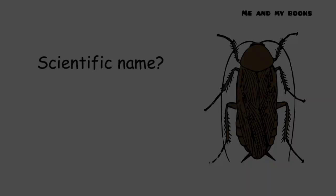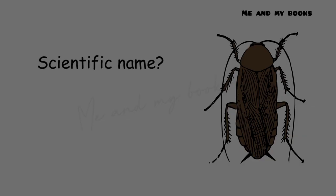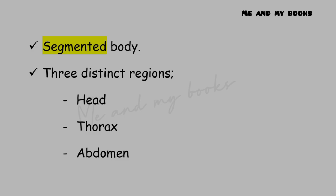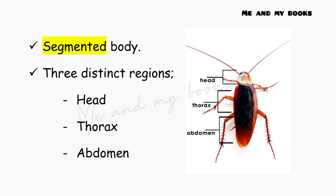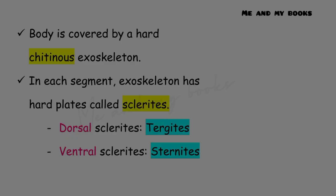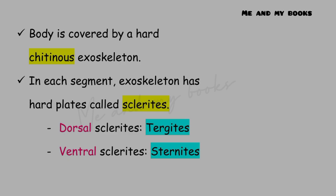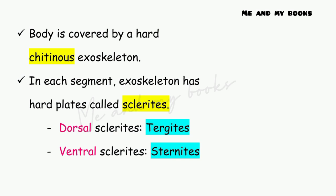Morphology means external features of an organism. The scientific name of cockroach is Periplaneta americana. They have a segmented body with three distinct regions: head, thorax, and abdomen. The body is covered by a hard chitinous exoskeleton made up of chitin.